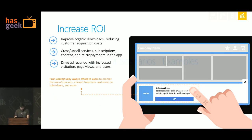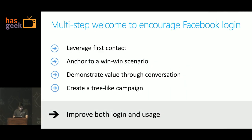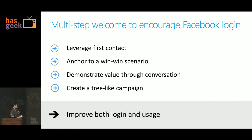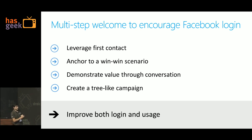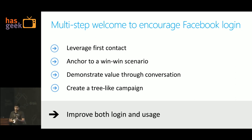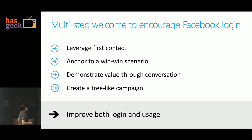Here are some example scenarios. On first contact, anchor to a win-win scenario, demonstrate value through conversation, create a tree-like campaign. The whole idea is you try and connect with someone, and once you connect with that person, it's easier to get them engaged in using your app. Demonstrate value through conversation — maybe you push a notification, they respond, you get to know them more, then push another notification, and finally they buy something from your service.